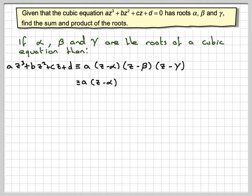Now if we expand these, we're going to write down a times z minus alpha, and then we're going to expand these two brackets here. So it's z times z minus gamma minus beta times z minus gamma. So we're going to get z² minus gamma z minus beta z plus beta gamma.